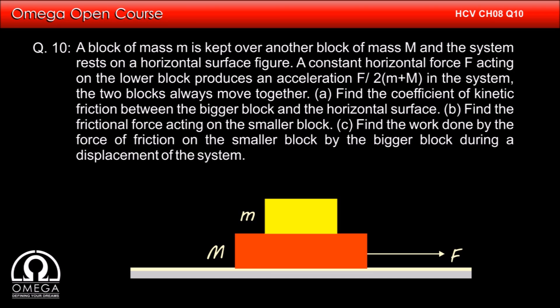Part A: Find the coefficient of kinetic friction between the bigger block and the horizontal surface. Part B: Find the frictional force acting on the smaller block. Part C: Find the work done by the force of friction on the smaller block by the bigger block during a displacement D of the system.